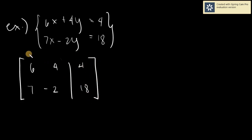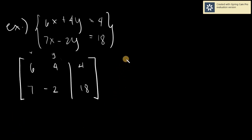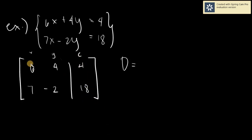Remember, these are your x's and these are your y's. For you to solve for D, cover your constants — meaning, do not look at them. What you need to do is get the cross product of your x and y. So this would be 6 times negative 2 and 4 times 7.